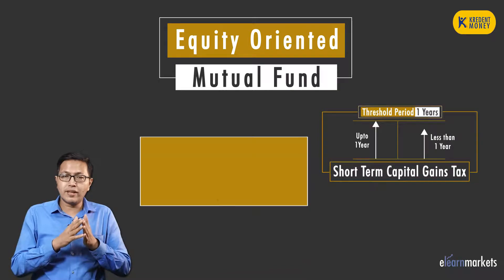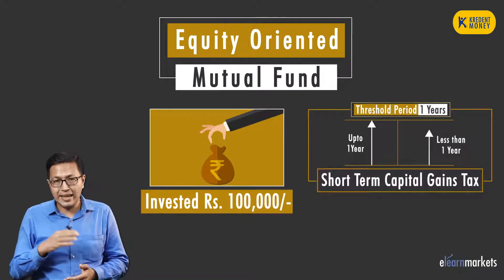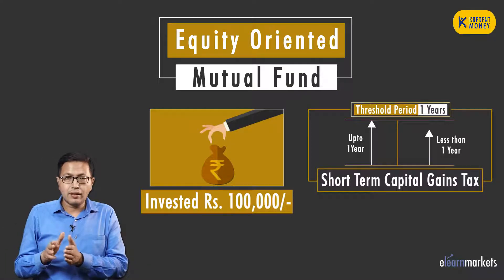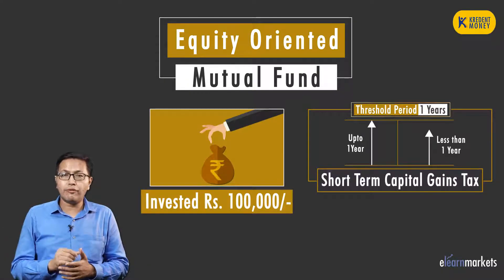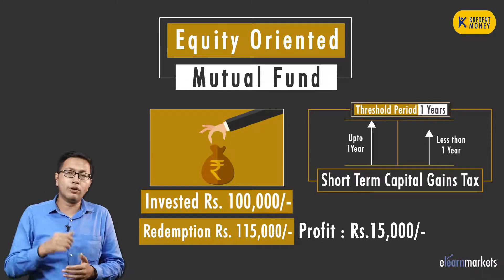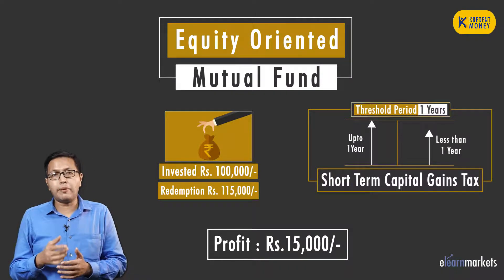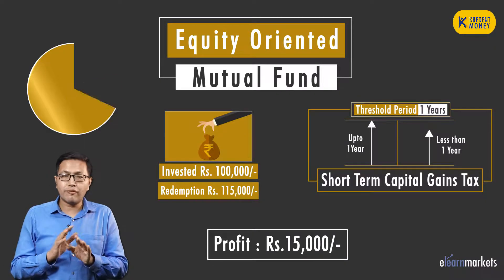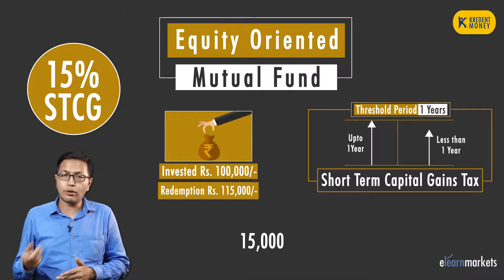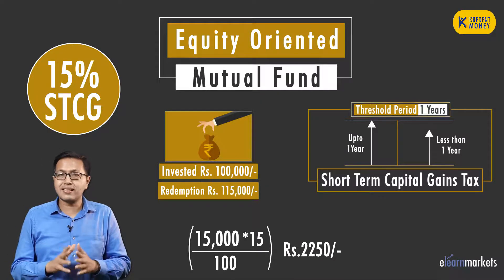For example, if you invest today Rs 1 lakh in an equity mutual fund and you take out your money in any time less than one year or up till one year — not more than that — and you come out with a capital of Rs 1 lakh 15,000, that means you have a capital gain of Rs 15,000. So you are supposed to pay short term capital gains tax on it at a flat rate of 15% as per income tax department rules. So 15% of Rs 15,000 is the flat rate applicable for all individuals. It is as simple as that.